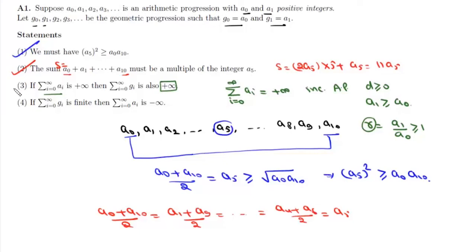Now if you look at statement 4, it says the sum of the infinite GP is finite. Now we know that the sum is finite when r, or mod r, is less than 1. It means a1/a0 will be greater than -1 but less than 1. And from here we'll get a1 is less than a0.